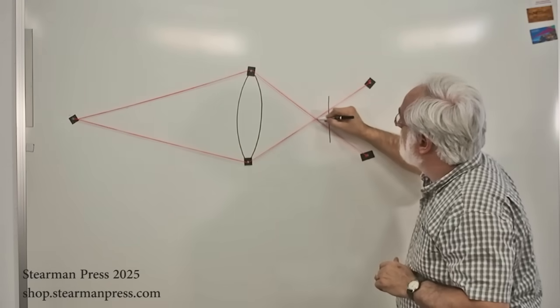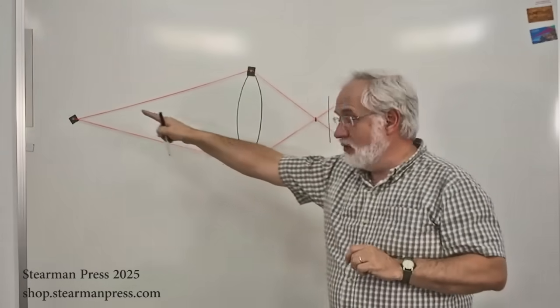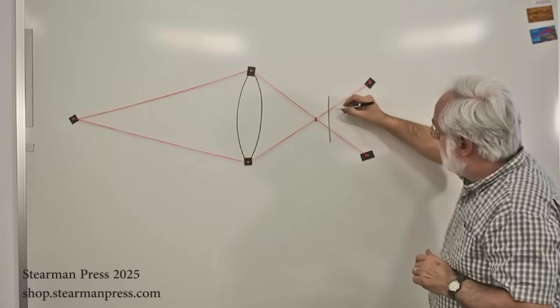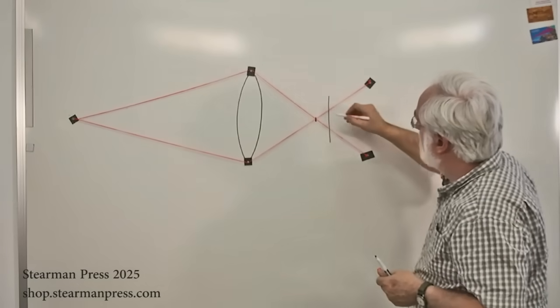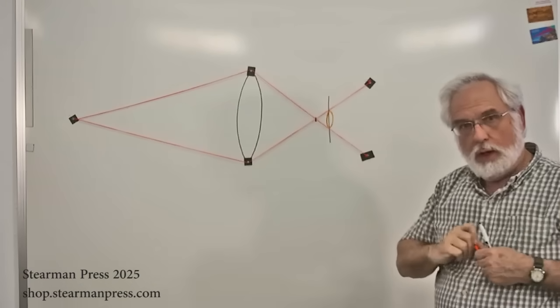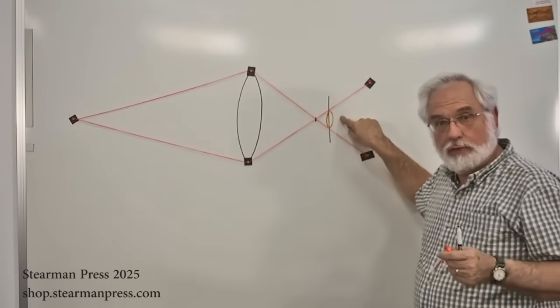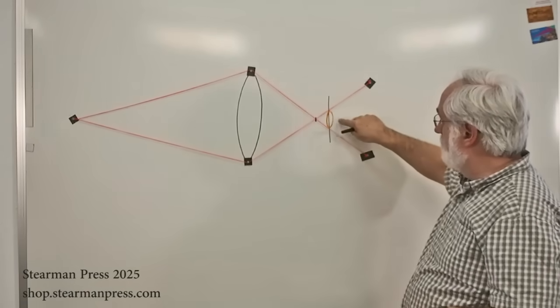Now, what happens, so here's our new focus plane, or at least the point of focus for that subject. What happens on the film is we now have a big blurry dot, big blurry circle. And this is known as the circle of confusion. And I'm not making that up. That's what the optical engineers call it. It's the circle of confusion.